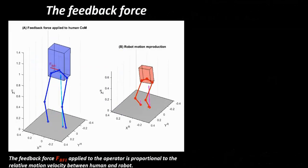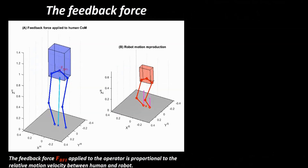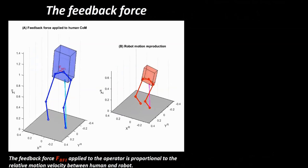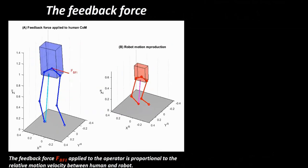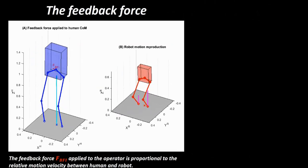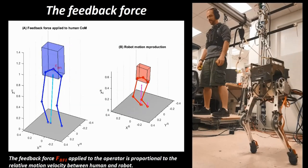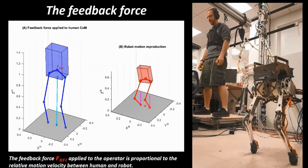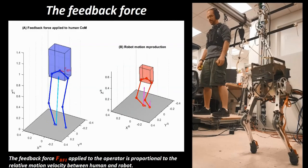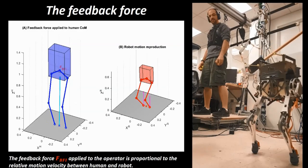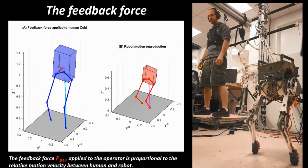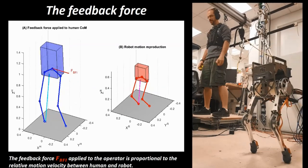Additionally, a feedback force, shown in red, is applied to the operator to make sure that the human movement is synchronized with the motion of a much smaller and lighter robot. This force is proportional to the relative motion velocity between human and robot.